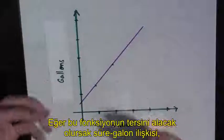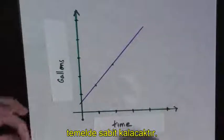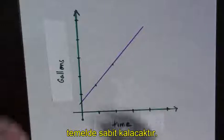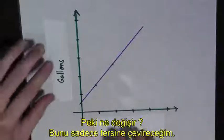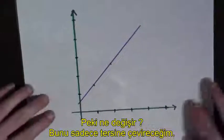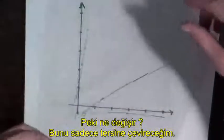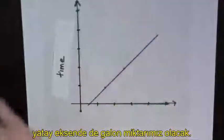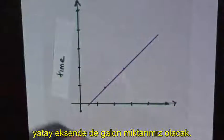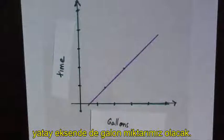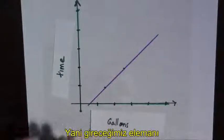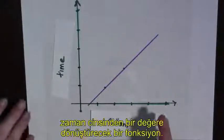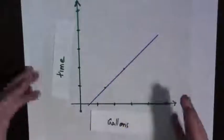If we find the inverse function, the relationship between time and gallons essentially stays the same. What changes is that this is flipped over. And now we have time on the vertical axis and gallons on the horizontal axis. So I give you a volume and it outputs time.